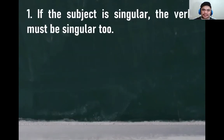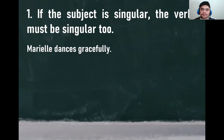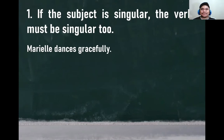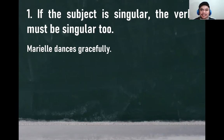Let's have number one. If the subject is singular, the verb must be singular too. This one is very basic. Now let's have examples. 'Mariel dances gracefully.' In making your subject agree with its verb, it's very important to know or to locate the subject and verb's placement in the sentence. In this sentence, we only have three words. Mariel is the subject. Dances is the verb.